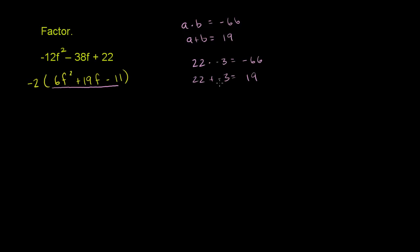Now we can rewrite this 19f as the sum of -3f and 22f. So it's -3f + 22f. That's the same as 19f, I just broke it apart. And of course, we have the 6f², and we have the -11 here.